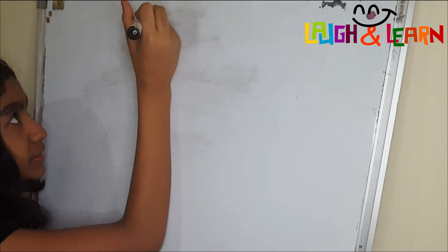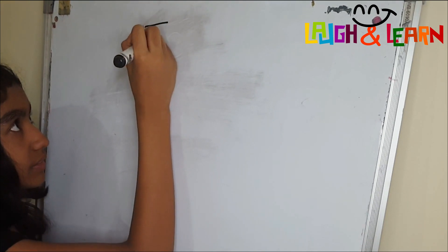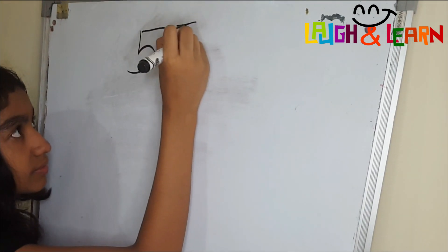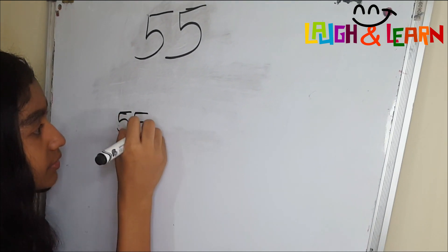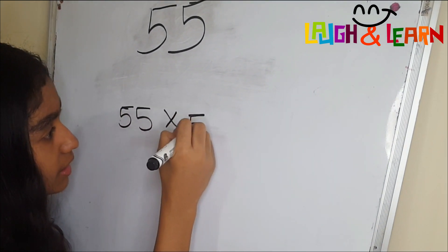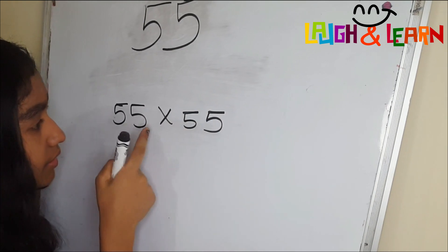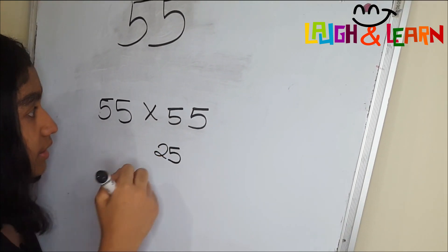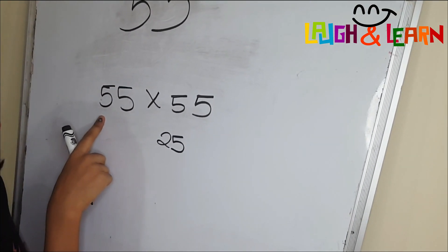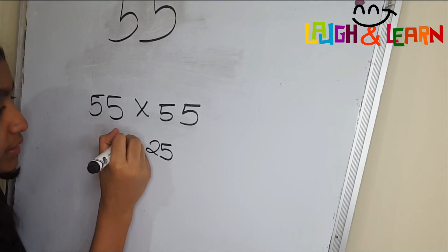Now let's do 55. 55 times 55. 5 times 5 equals to 25, then the number after 5 is 6. 6 times 5 equals to 30...25.